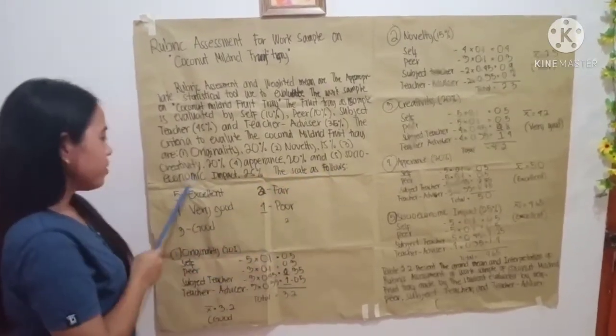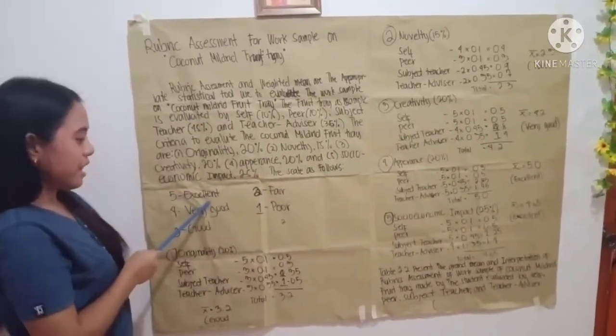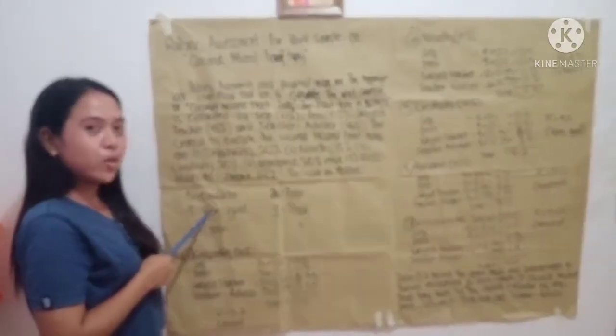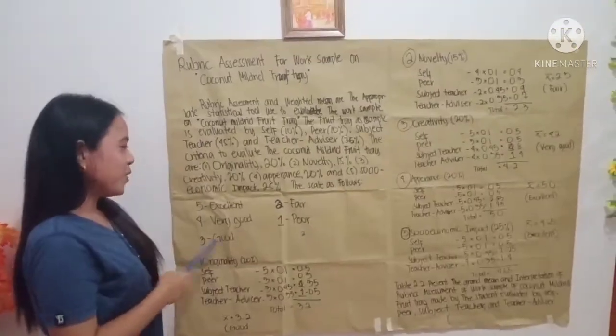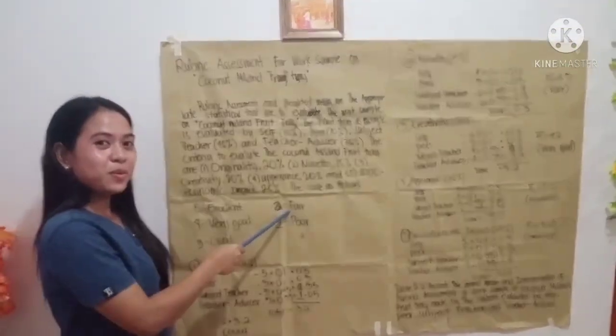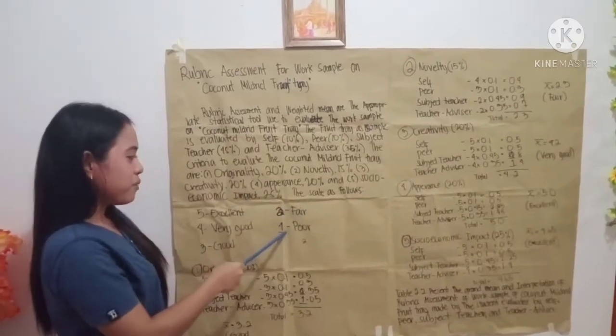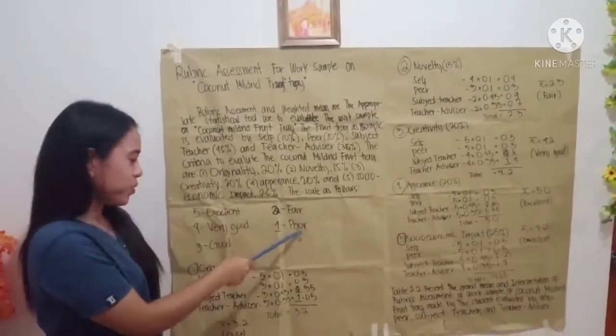The scale is as follows: 5 — excellent; 4 — very good; 3 — good; 2 — fair; and 1 — poor.